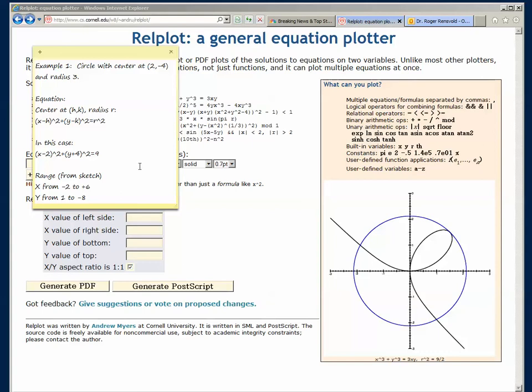So in this case that equation will be (x-2)^2 + (y+4)^2 = 9. Now before we do anything on the computer, we get a piece of scratch paper and a pencil and we make a sketch. And from the sketch of our circle we determine that in order to display it properly we want to show x from -2 to +6 and y from 1 to -8.